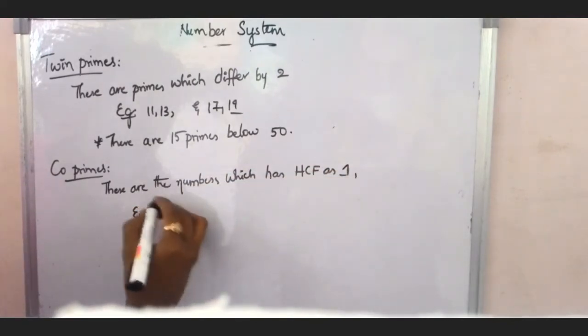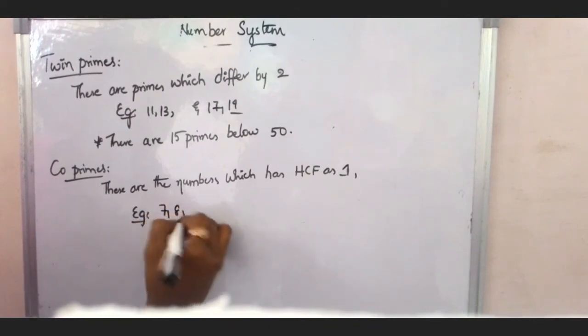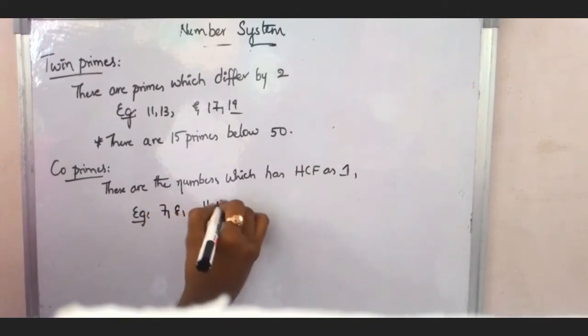There are 15 primes below 50. In the first place, we have 15 twin primes.